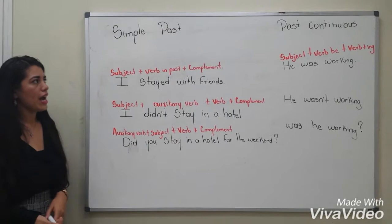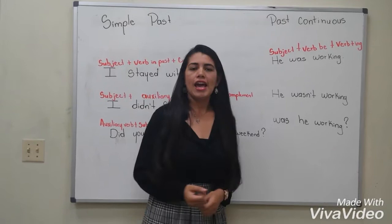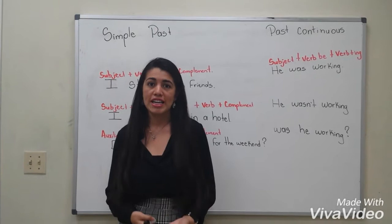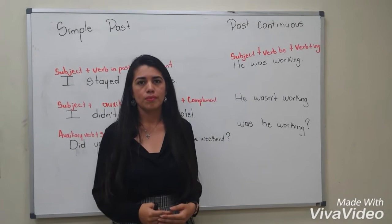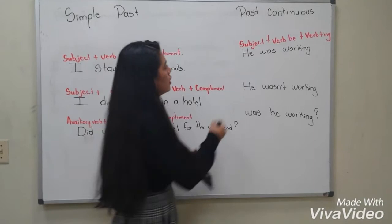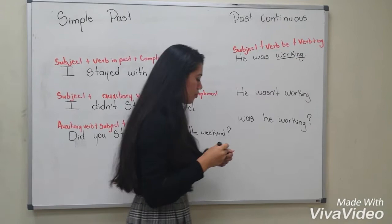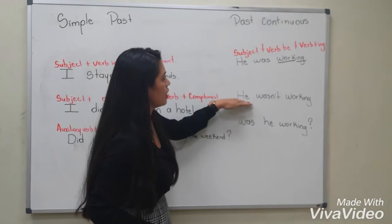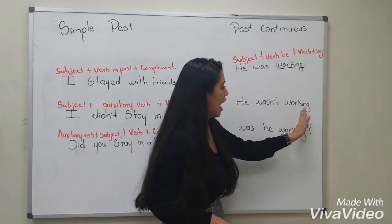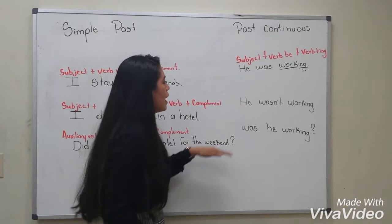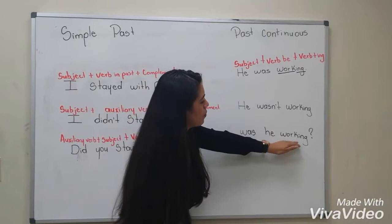Now I'm going to explain the past continuous. Use the past continuous to describe an action in progress at a specific moment in the past. For example, he was working. We use subject plus verb be plus verb plus -ing. In the negative sentence: he wasn't working — subject, verb be in negative form, verb plus -ing. For a question: was he working? We use verb be, subject, verb plus -ing.